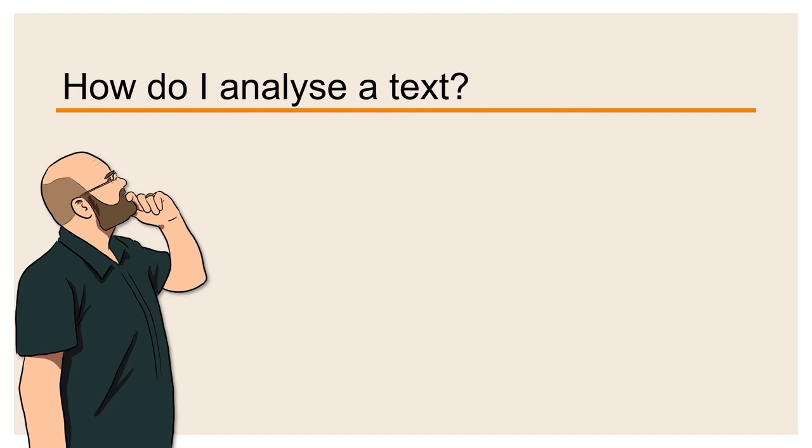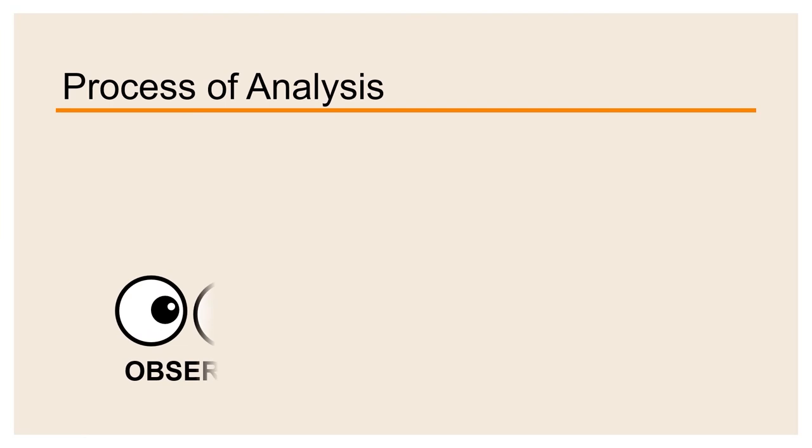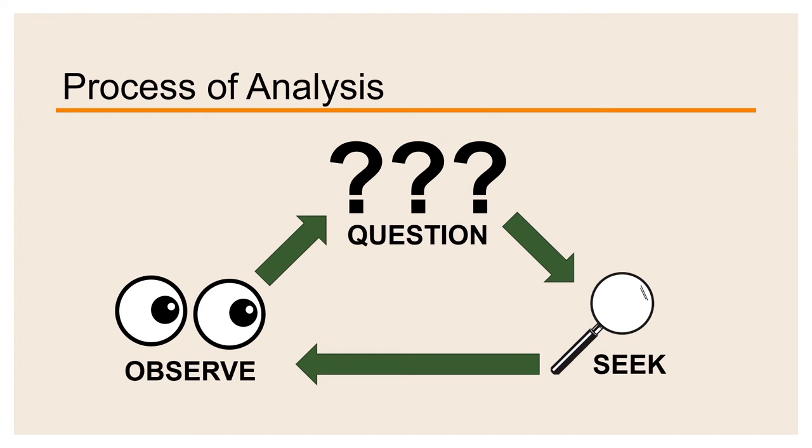So now that we have some understanding of what analysis is, you're probably asking yourself, how do I analyse a text? And in this section, we're going to go through the process of analysis. At its core, analysing is a pretty straightforward three-step process, in which we observe, question, seek answers to those questions, and then use the information we find to inform more detailed observations.